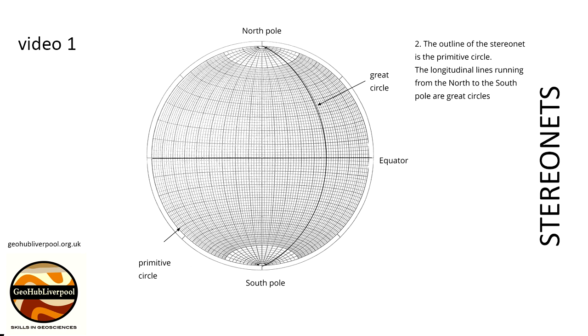The equator on the StereoNet is the east-west line dividing the net into two equal parts. It's a bit similar to the equator on the Earth's surface.